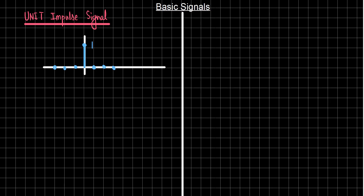We define it with the symbol δ[n]. This δ[n] is one at n equals to zero, but is zero for n not equals to zero. Such a signal is called a unit impulse signal, indicated by δ[n]. It is a function of n, and this very simple signal forms a very fundamental block for analyzing signals and systems.